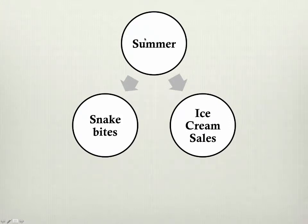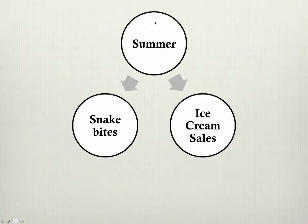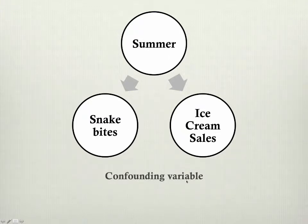Summer, as it gets hotter outside, makes the snakes come out. And summer, as it gets hotter outside, makes people buy ice cream and also makes people go hiking. So because people are out in the heat in the summer hiking, they're more likely to get bitten by snakes and they're more likely to buy ice cream. Snake bites and ice cream sales are absolutely related — there might even be a strong or even perfect relationship between the two — but that doesn't mean it has to be a direct relationship. It can be a relationship caused by a third variable, which we would call a confounding variable.